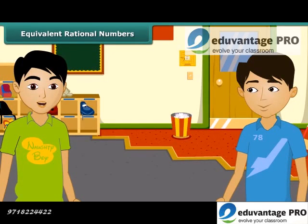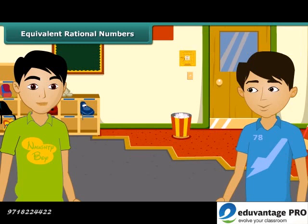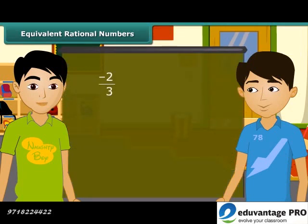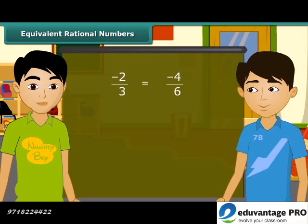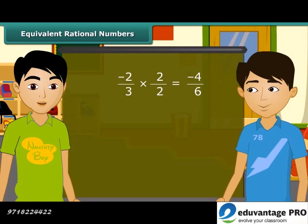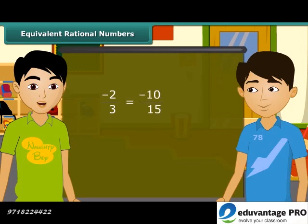I will now tell you about equivalent rational numbers. Look at these two rational numbers — both are equivalent. When we multiply the numerator and denominator of a rational number by the same non-zero integer, we obtain another rational number which is equivalent to the original. For example, minus 2 by 3 is equivalent to minus 10 by 15, because when we multiply the numerator and denominator by 5, we get minus 10 by 15.